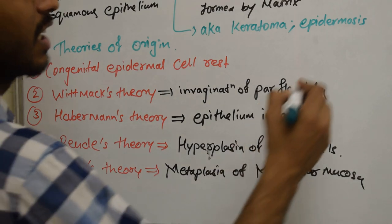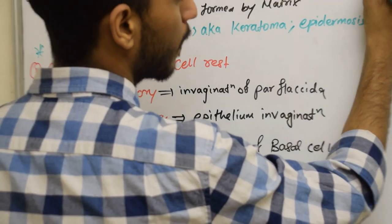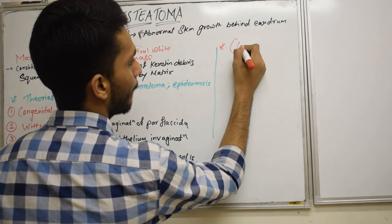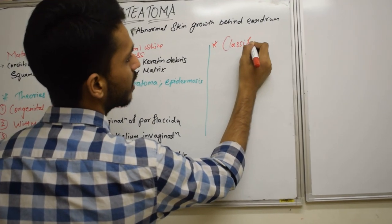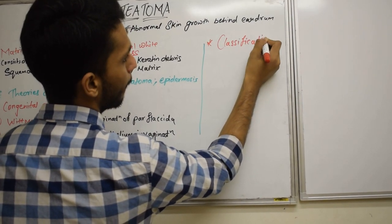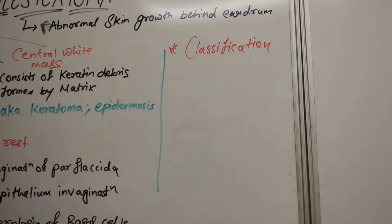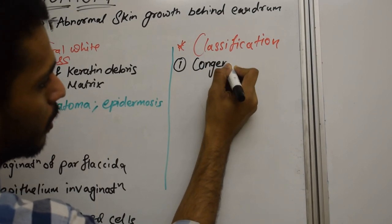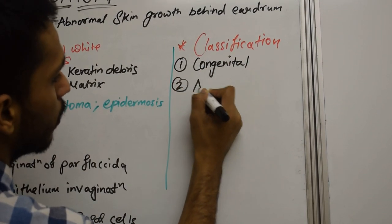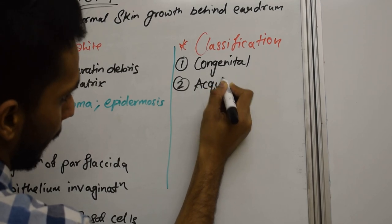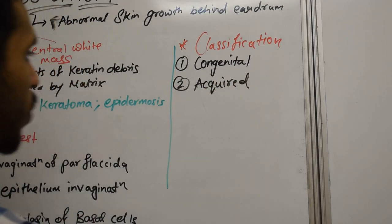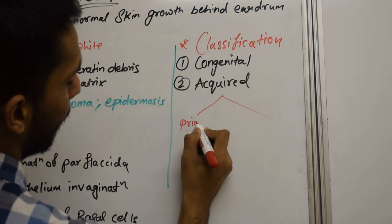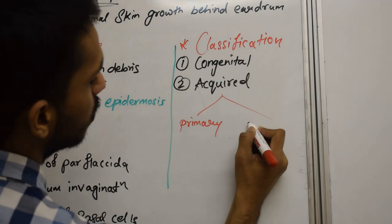Cholesteatoma is classified mainly into two types. First is congenital, and second is acquired. In acquired, we have two subtypes: primary and secondary.